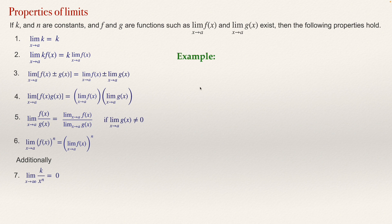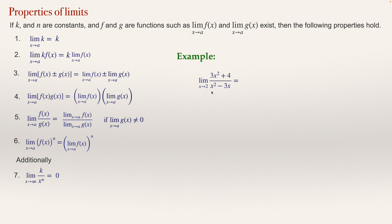For example, we can solve this problem: the limit as x approaches 2 of (3x² + 4) divided by (x² − 3x). We know that a rational function is continuous, and for that reason we can just substitute — as long as the denominator is not zero when we substitute x = 2. But just for practicing how to apply these properties, we are going to solve it using the limit laws, applying property 5.